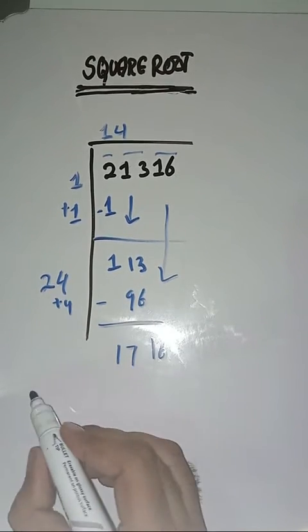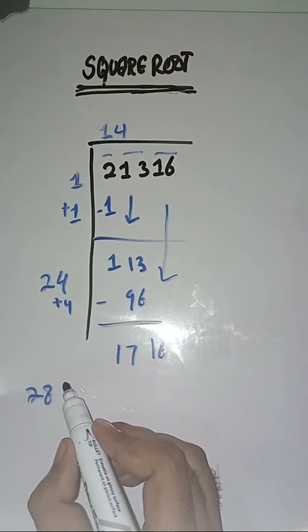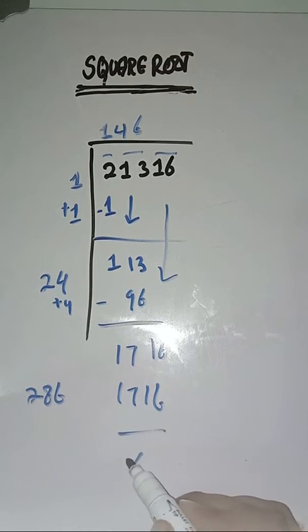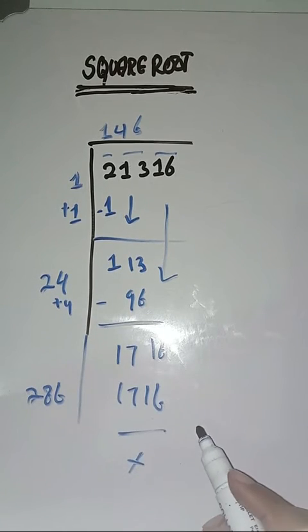plus 4 is equal to 28. Now we will take a number 6. 286 times 6 is 1716. So this is completely solved. So square root